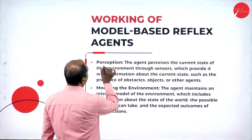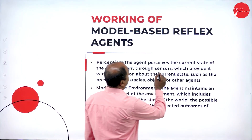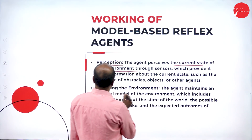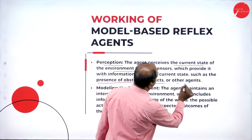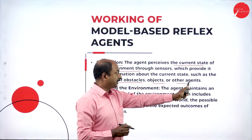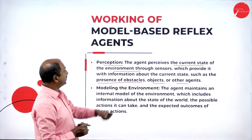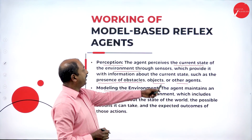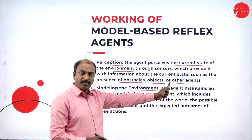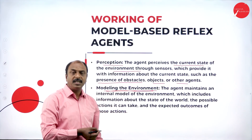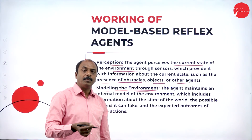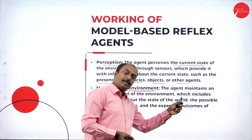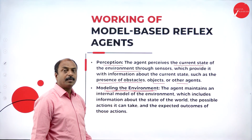The first step is perception — the agent receives the current state of the environment through sensors, which provide information about the current state such as the presence of obstacles, objects, or other agents. The second step is modeling the environment — based on the data or input from the environment, it selects the model. As we have in this model based reflex agent, it works based on existing models of different environments, selecting the model based on the percept from the environment.